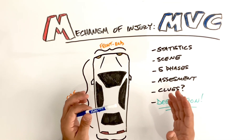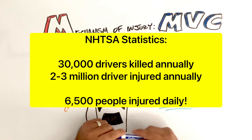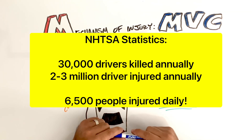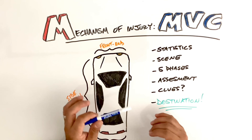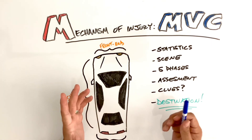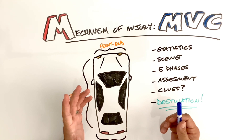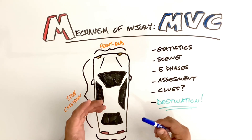Statistically, 30,000 Americans are killed annually on the roadways, according to the NHTSA. 2.3 million Americans are injured annually. So if you break that down, about 6,500 people daily are injured in motor vehicle collisions. So it's a very prevalent scene you're going to be responding to, assessing patients, and transporting away from.